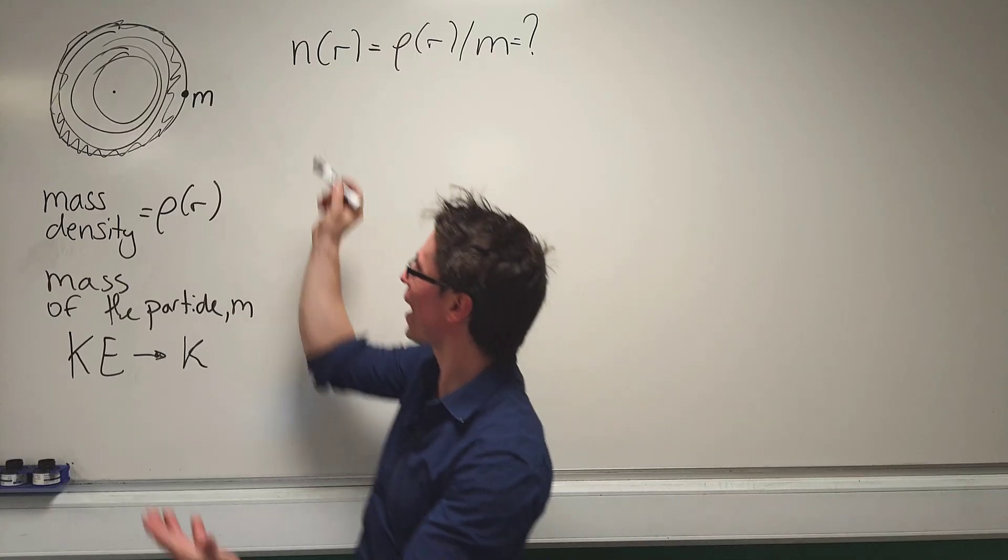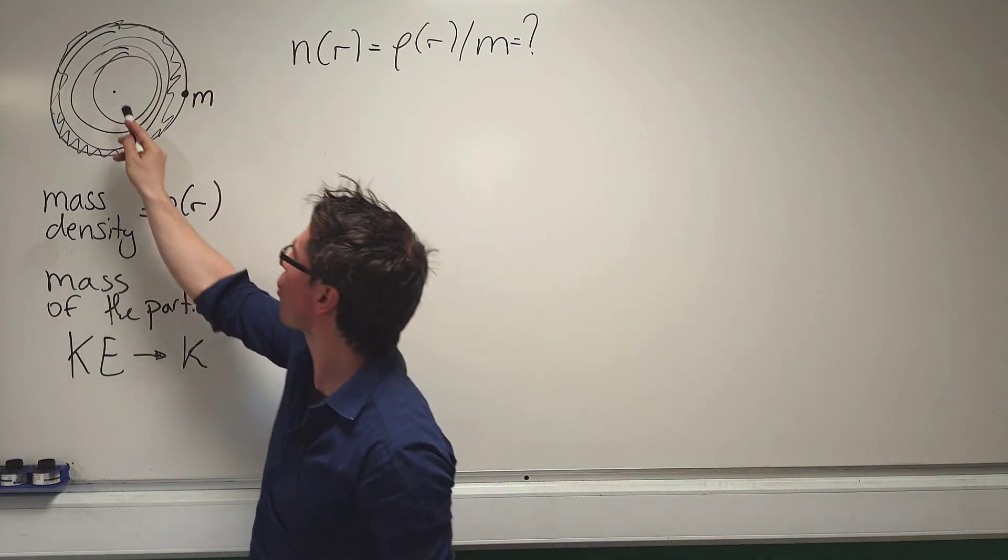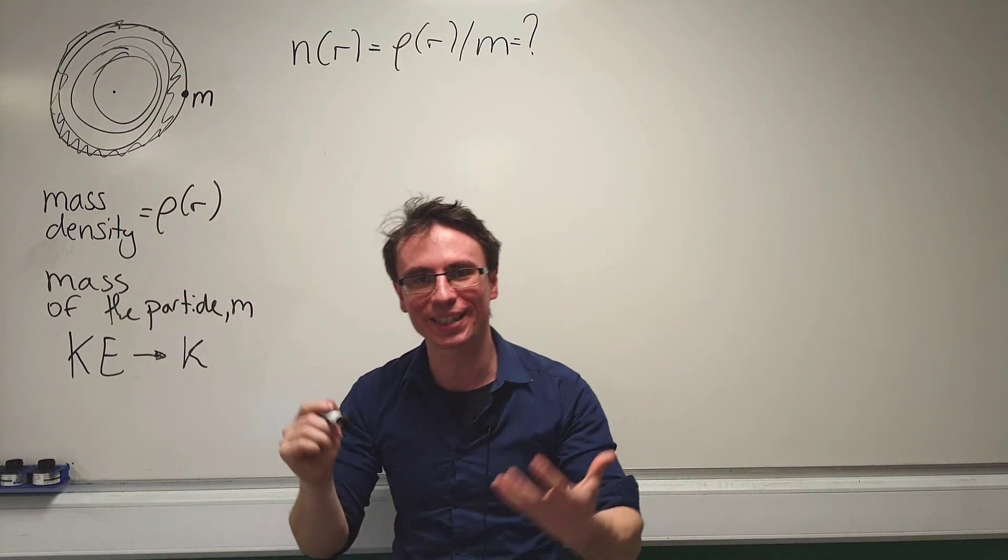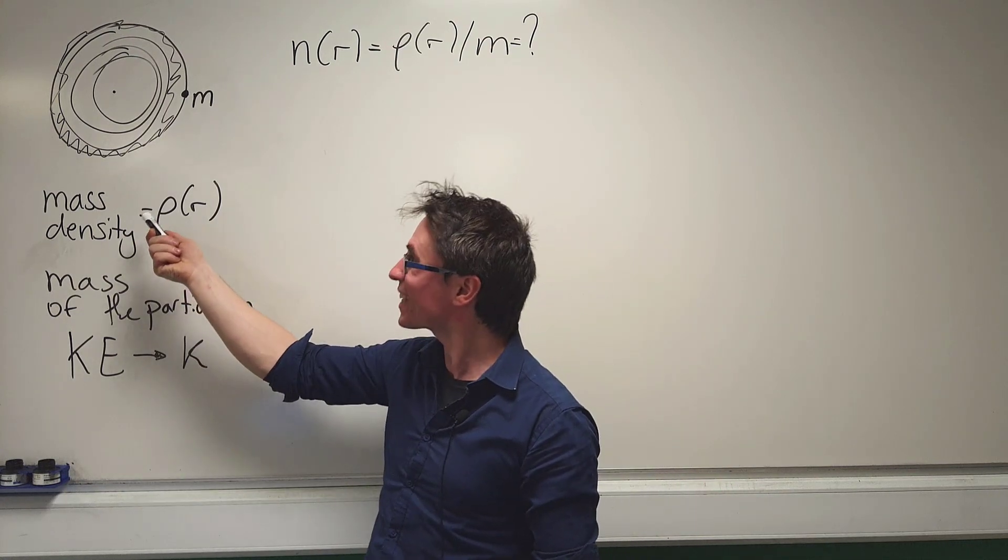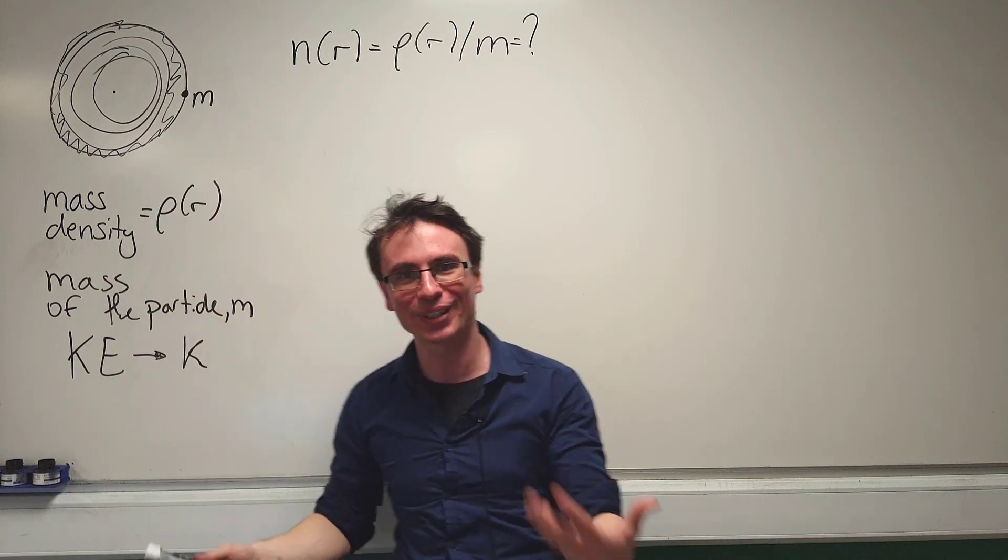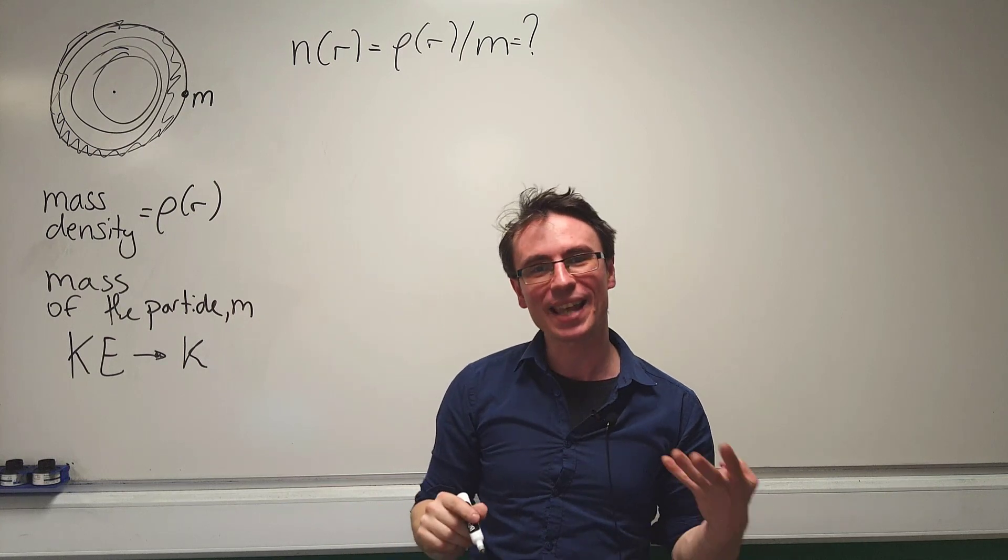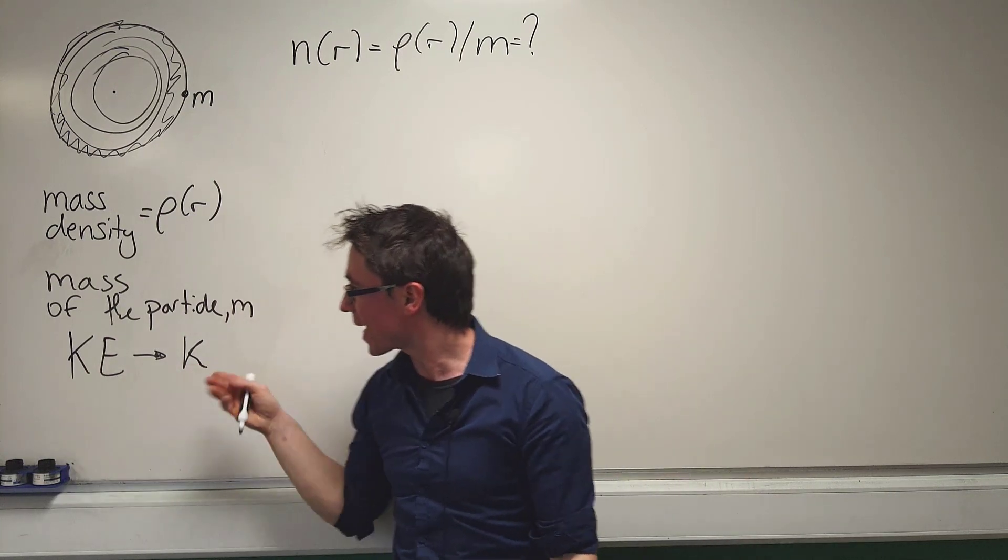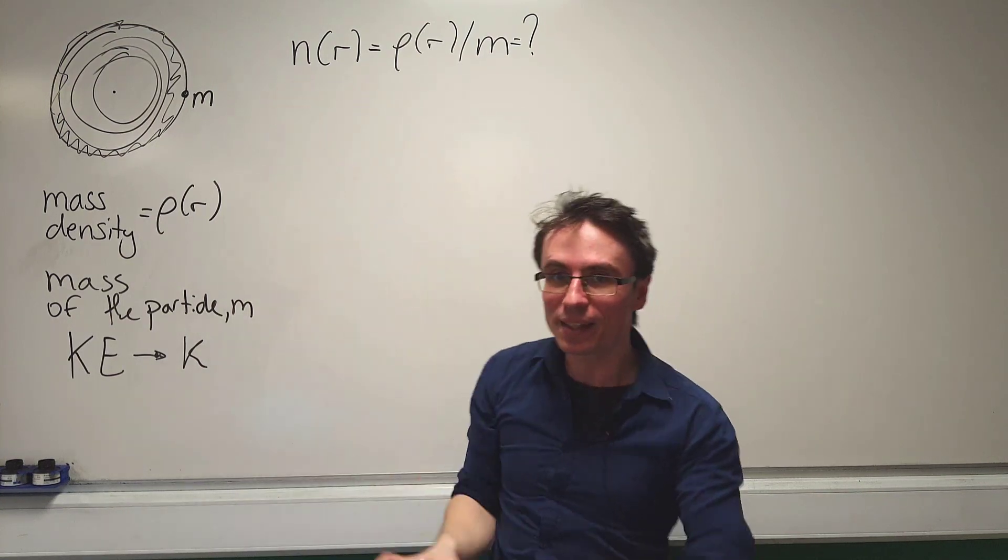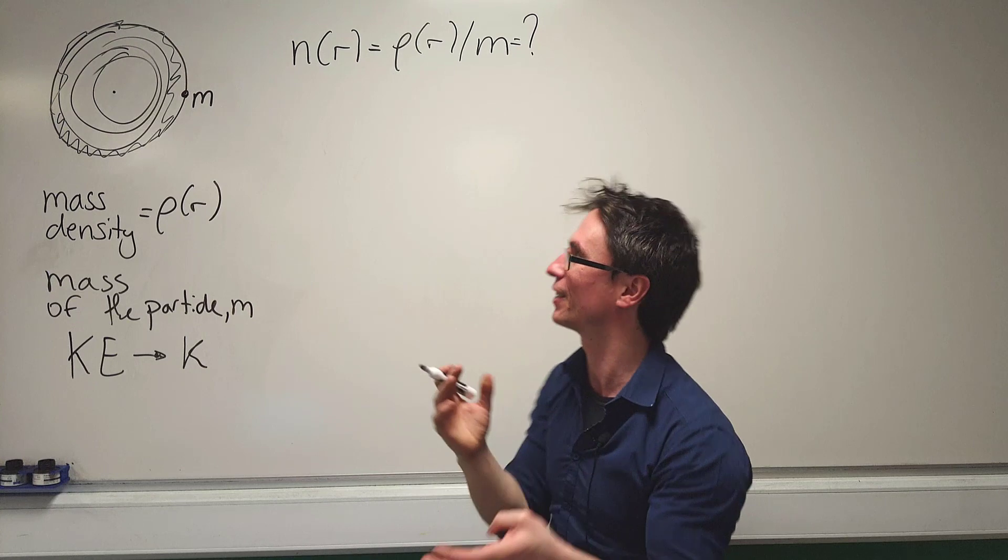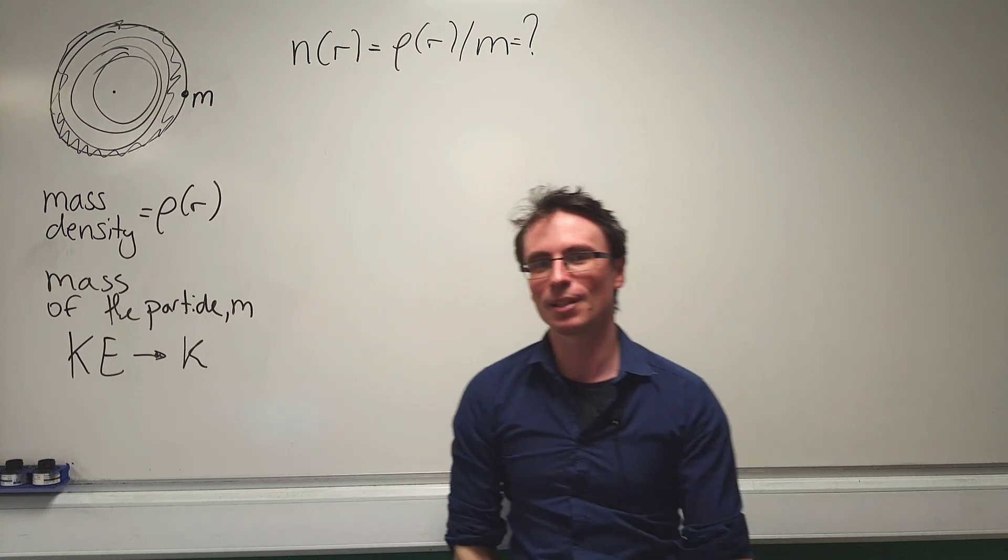Let's solve question one. We have a lot of particles which are part of this gas and they're all orbiting around this center under the gravitational force. Given that the mass density of this object depends on the distance r and the mass of a single particle is m, additionally the kinetic energy of a single particle is k. Now, what we're looking for is the number density, which of course is a function of the radius, which is simply defined as the density divided by the mass.